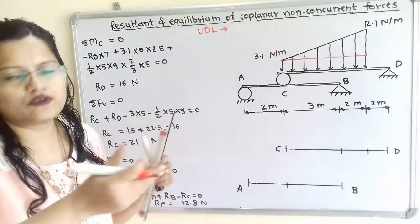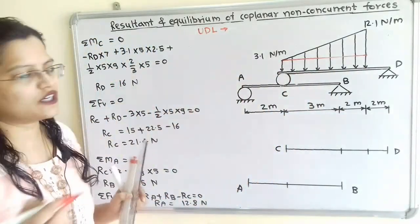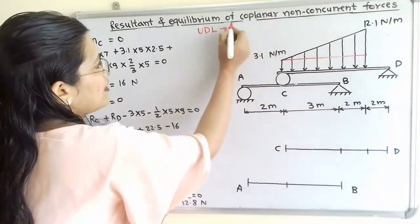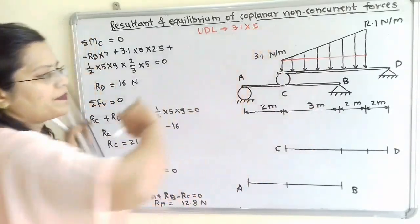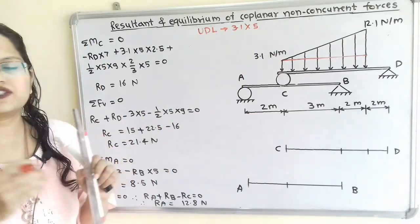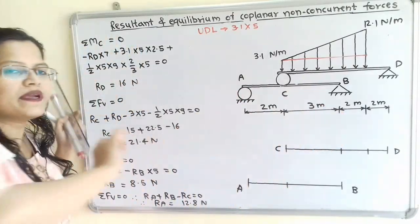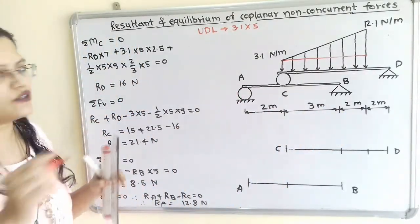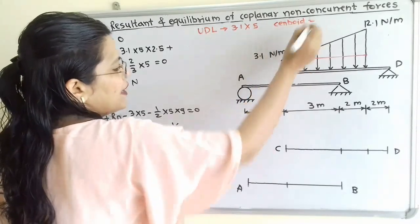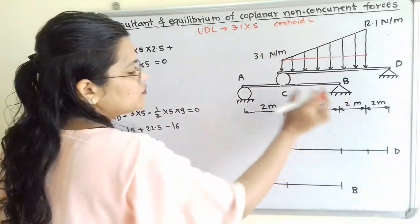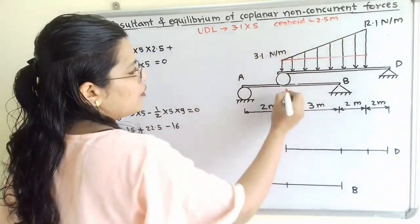The magnitude of this uniformly distributed load — how to calculate it? The total magnitude acts at the centroid, which is the middle point of 5 m (that is 3 plus 2). So centroid is at 5 divided by 2, that is 2.5 m from point C.